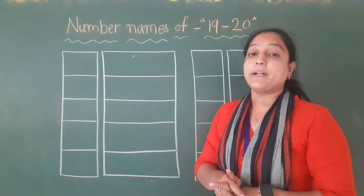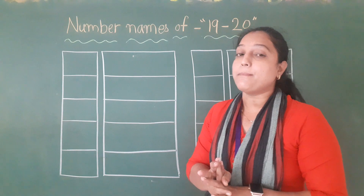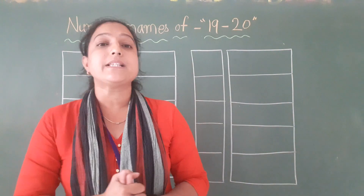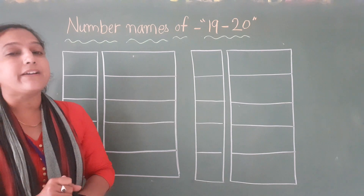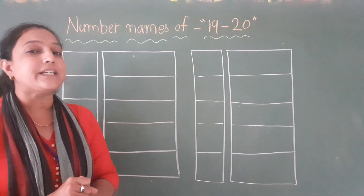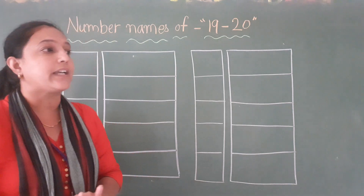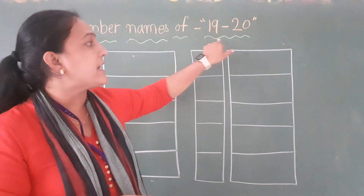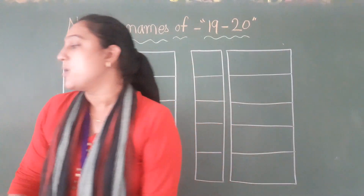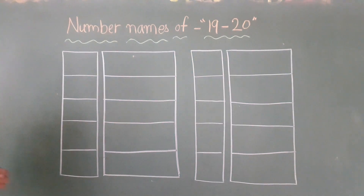Maths. Maths ke andar hum padhenge Number Names. 18 tak ke Number Names, we have already completed — 1 se lekar E-I-G-H-T-E-E-N tak. Aaj karenge 19 aur 20 ka number. So, let's start.